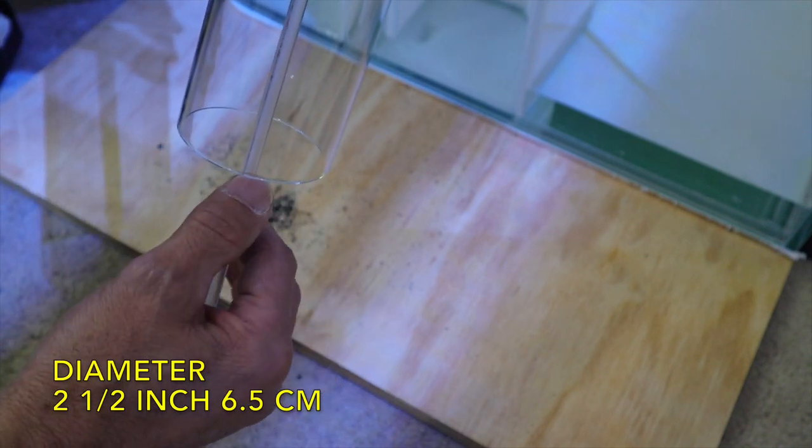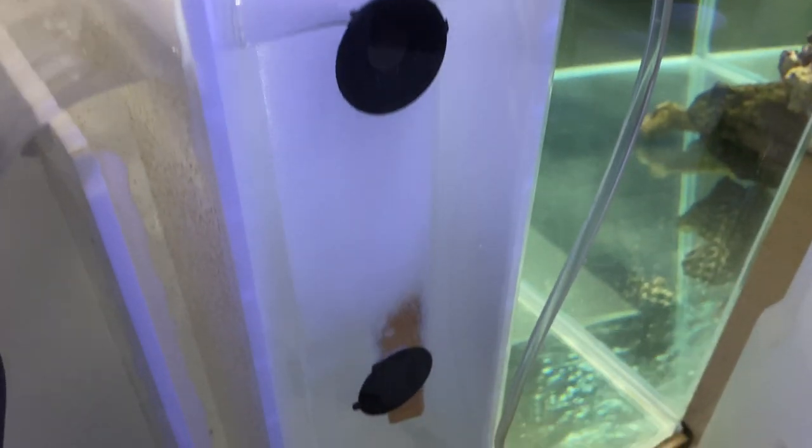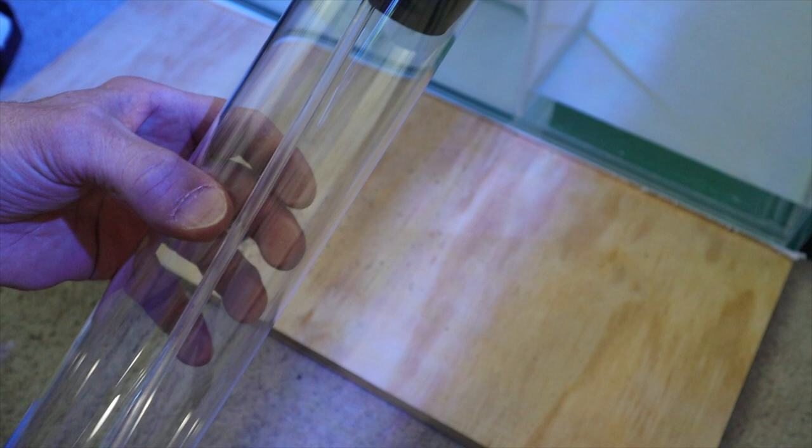All that a skimmer does is it fractionates the water, makes foam, and that lifts out undissolved compounds and organics from the water before they break down. So the principle is just to get that out of the water and all you need is a glass tube, contained foam fractigenation, and a way to remove it.